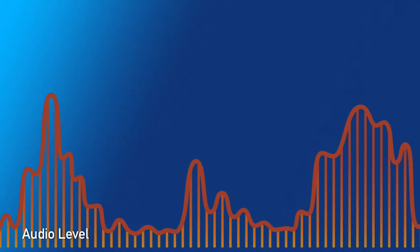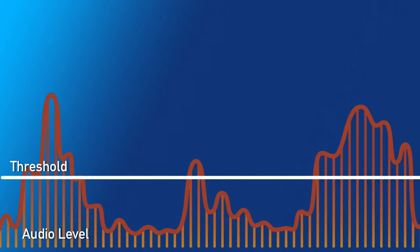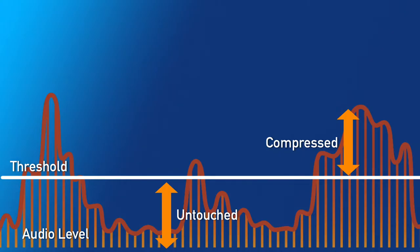Imagine we have a waveform — this is the level — and then we set a threshold. This is where we want the compression to start. All audio above the threshold will be compressed and all audio below the threshold will be untouched. Because we have compressed the loudest part of our signal, we can raise the overall volume of our track, and that's why there is some truth to that myth.